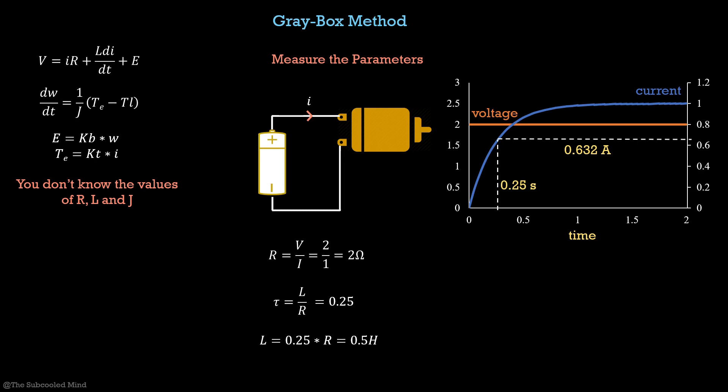But this technique will only apply to the DC motor case. If your system is different, for example, you are tuning a heat exchanger control system, then you have to come up with your own measurement techniques. And it is not always easy to measure the parameters. For example, you still have to find the inertia of the motor. It is not straightforward to do that and it also depends on what is attached to the shaft of the motor.